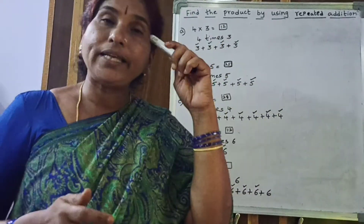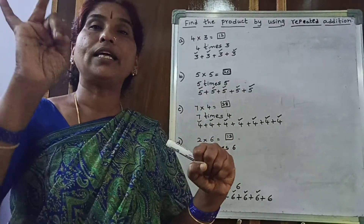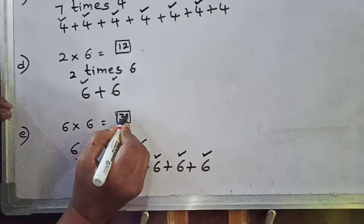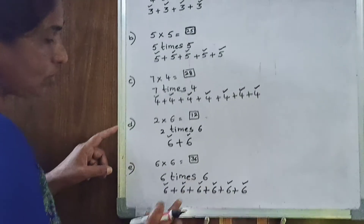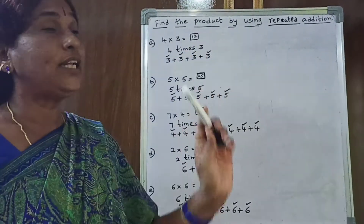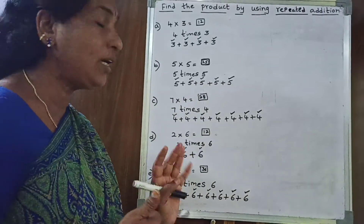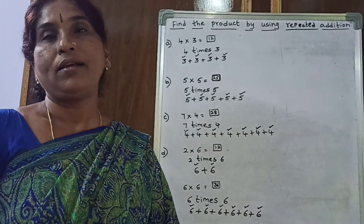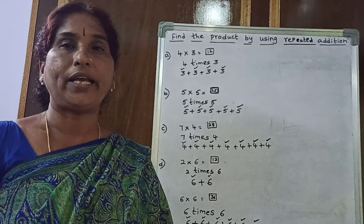And the last one: 30 in mind, 6 in hand, 30 after: 31, 32, 33, 34, 35, 36. So 6 times 6 is 36. This is how you find the product by using repeated addition — you go on adding repeatedly, and then you get the product. Is it clear, children? I hope you have understood this topic. Watch the video and do the homework by seeing the PDF. Thank you.